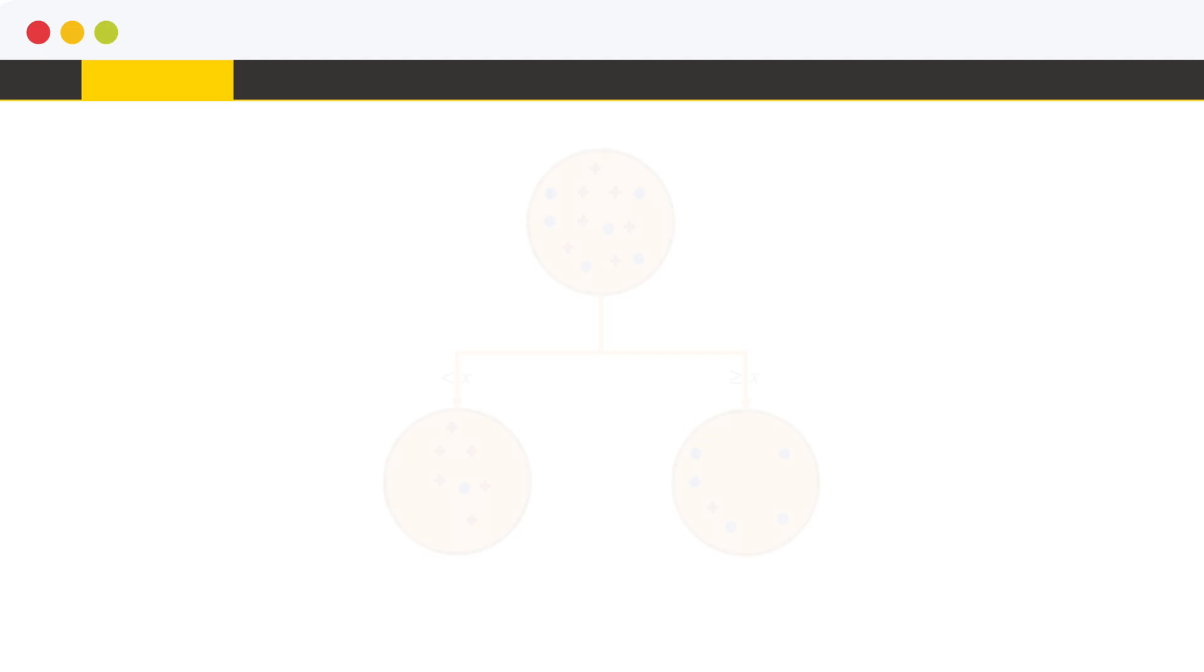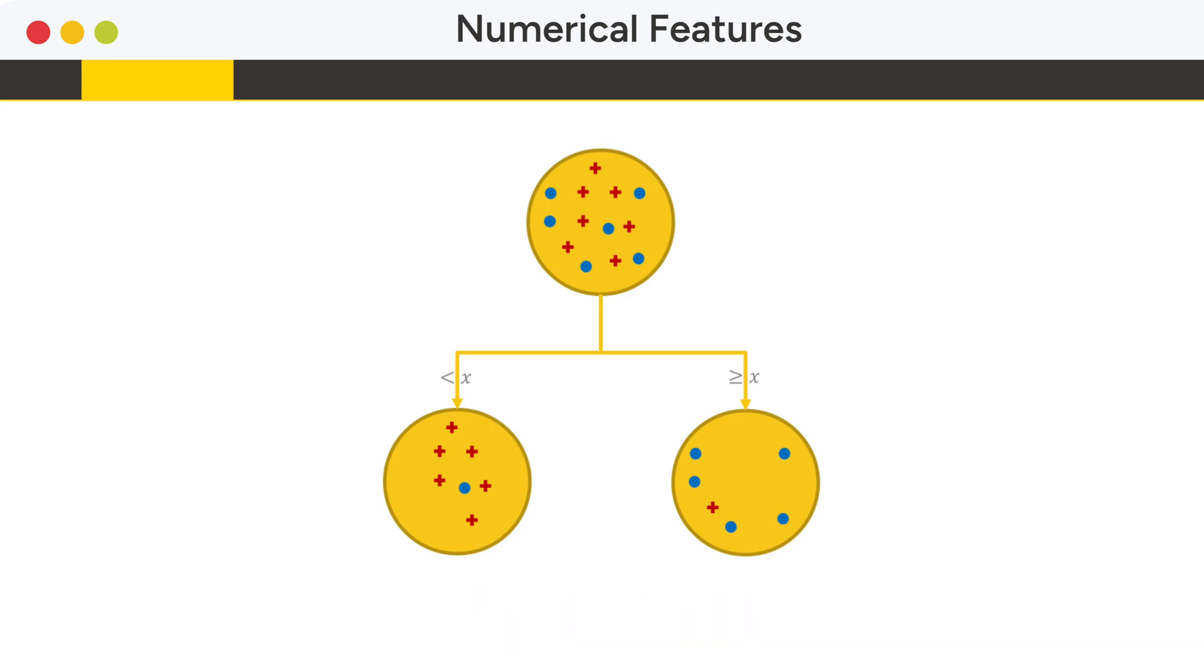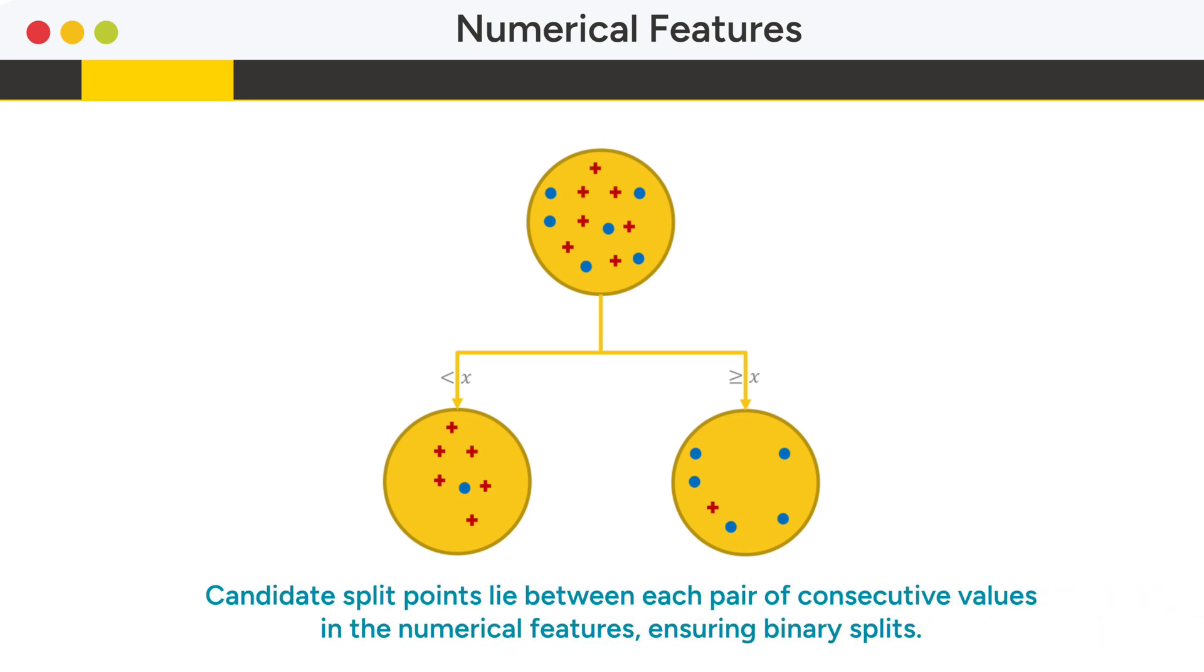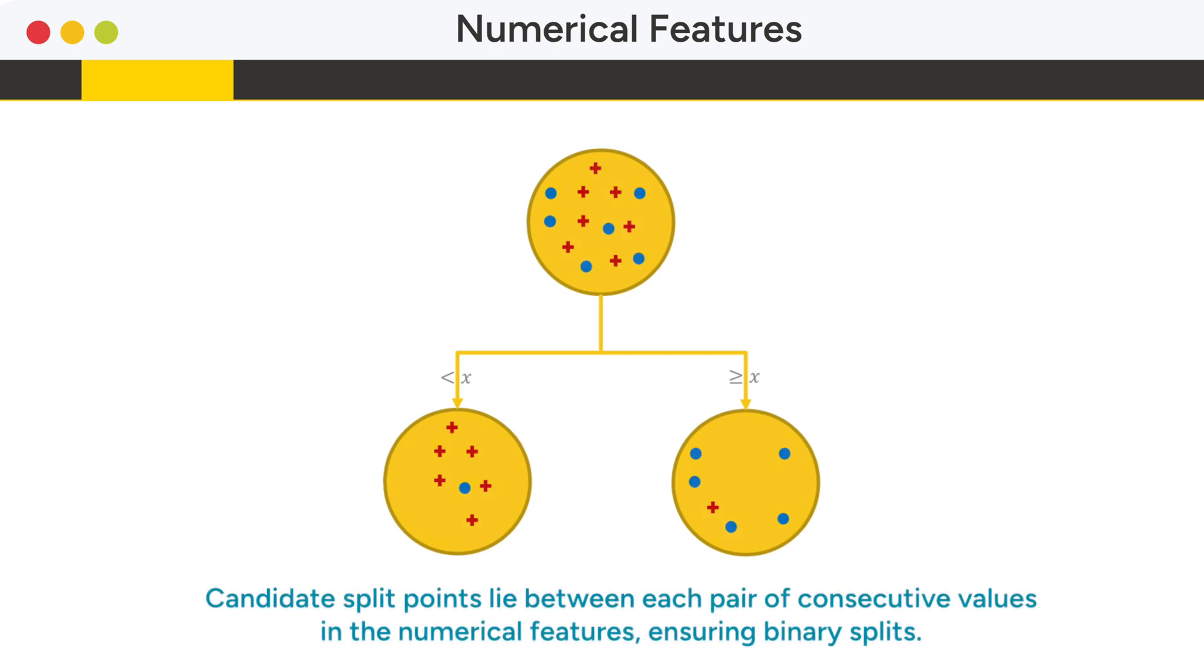For numerical features, splits are always binary. Candidate split points are between every two consecutive values of the numerical features in the training data, ensuring a binary split for numerical data.